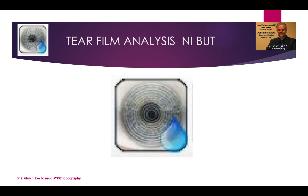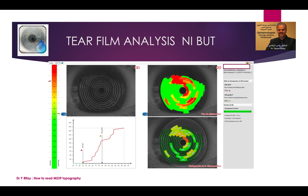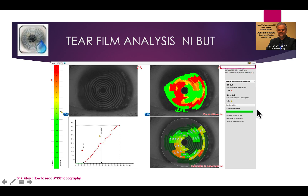Tear film analysis, or non-invasive breakup time, is very helpful in dry eye. You can see an abnormal non-invasive breakup time with evaporation of the tear film. You have a curve showing the non-invasive breakup time — the first tear film that evaporates gives you that time, and this is the average. Numeric data helps you diagnose and follow up dry eye.